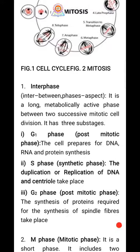Interphase has three sub-stages. The first is the G1 phase, also known as the pre-mitotic phase. In the G1 phase, DNA preparation occurs, RNA is also prepared, and proteins are also synthesized.